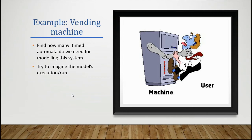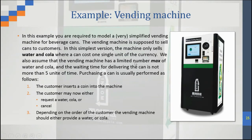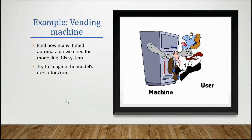So how can we model this system? First, we should figure out how many timed automata we need. In this system, it's clear that we have two timed automata — one is the machine and the second one is the user. Before we start modeling, we should imagine the execution of our system. From the description, we have two types of products, a limited supply, the user's actions, and the machine's responses.